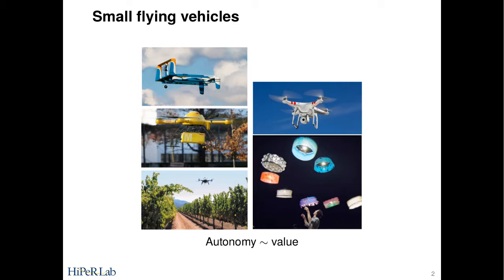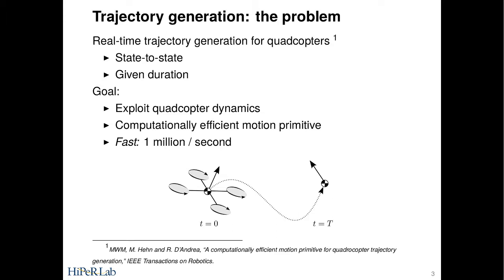This is some older work we've done where we're trying to think about how do you move these drones from one point to another. The goal really is to exploit the dynamics and to be fast. What I mean by fast is these vehicles are very agile and you want to use this agility. You want to have trajectories that push you close to what is possible, and at the same time you want to be fast in computation so that you can react to things in real time.